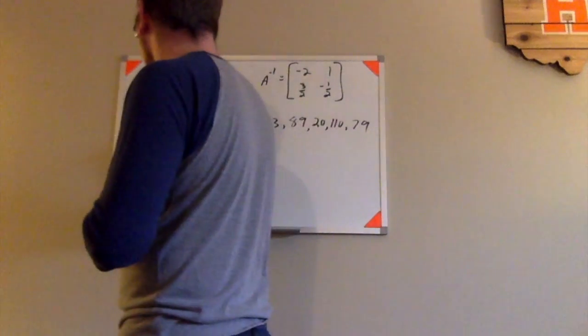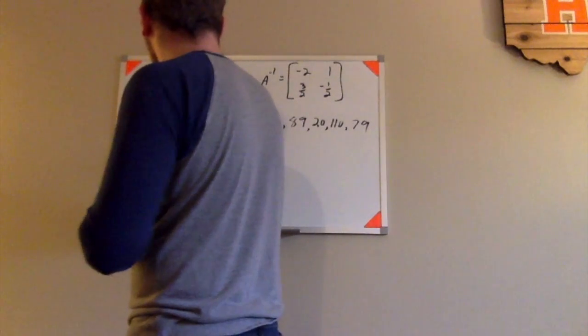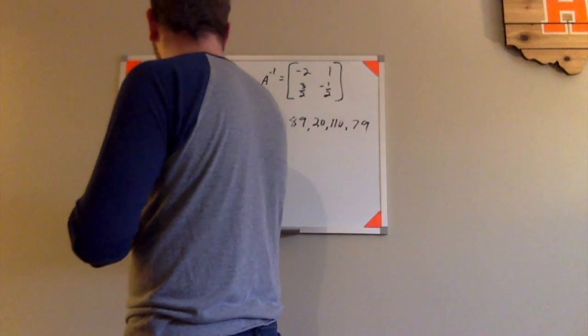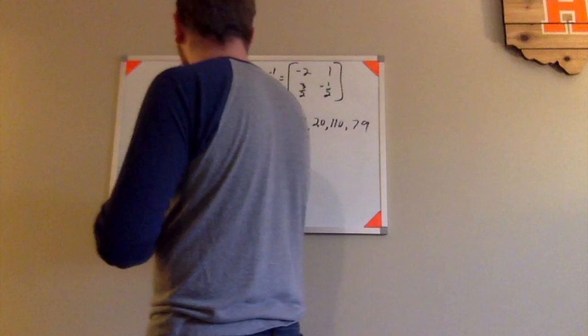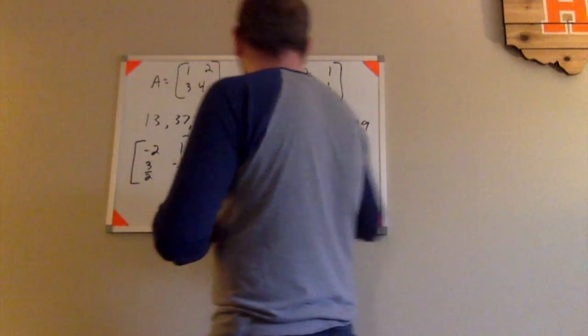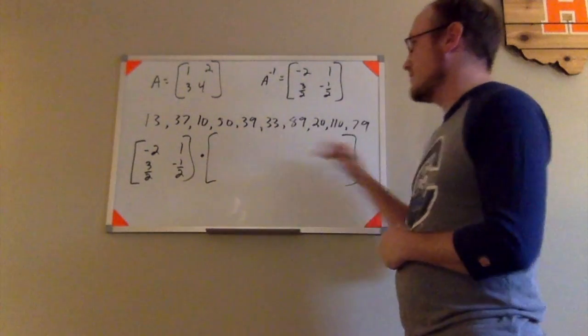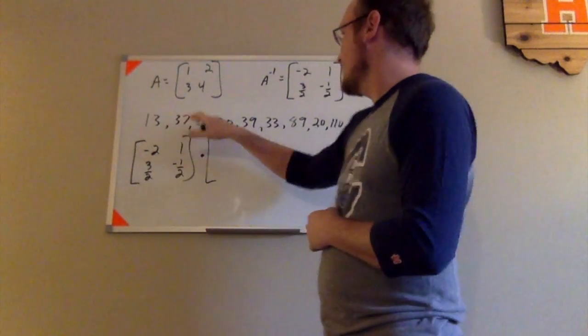So I'm going to go ahead and start off over here with this inverse matrix of negative 2, 1, 3 halves, negative 1 half. And I need to multiply by the matrix. So I need to arrange this series of numbers into 2 rows,